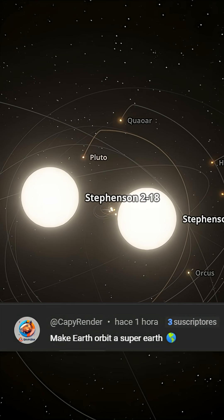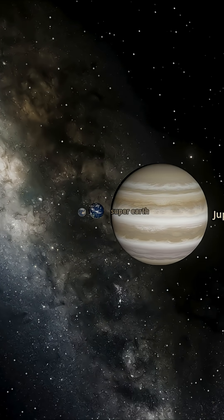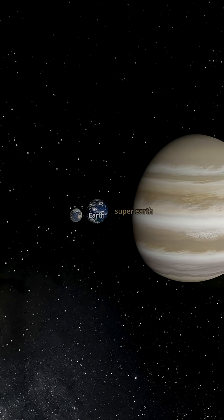Make the Earth orbit a super-Earth. Okay, but let's start slowly. First thing first, a super-Earth is a planet with similar conditions to Earth but with 5 to 10 times its mass.